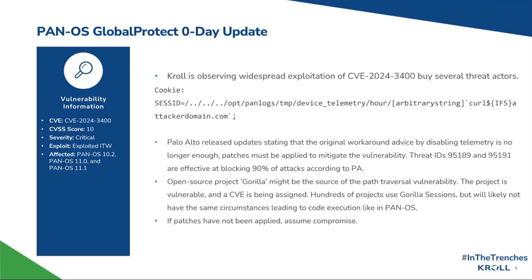Palo Alto have released several updates to their advisory, and if you're running these devices, we recommend checking that at least daily. They categorize the attacks into four different levels. Level zero are unsuccessful exploitation attempts — we're seeing hundreds and thousands of those. Level one is where the vulnerability is being tested on the device. A zero byte file is created and is resident on the firewall, allowing a threat actor to receive a 403 instead of a 404 error, confirming that the device is indeed vulnerable.